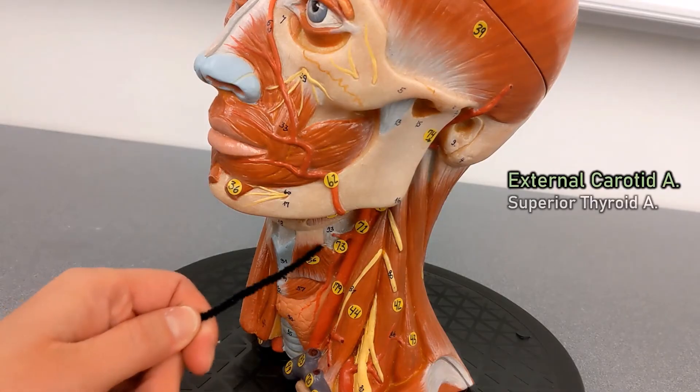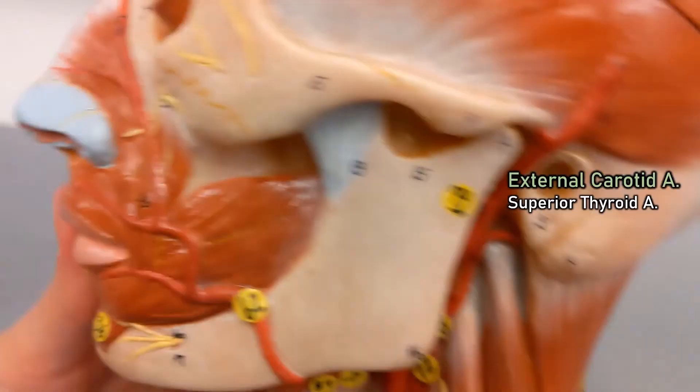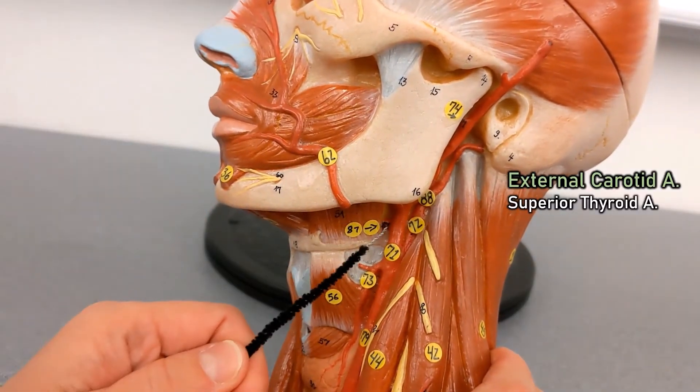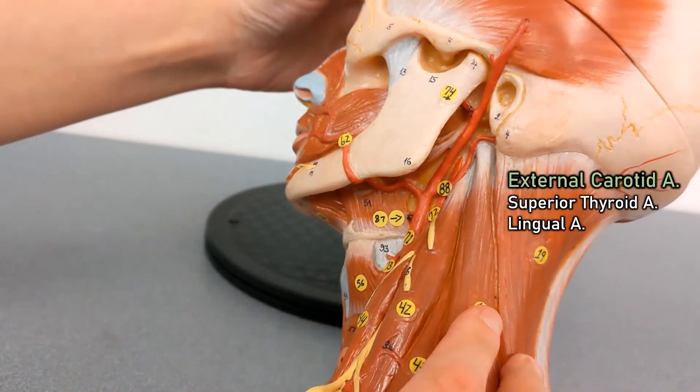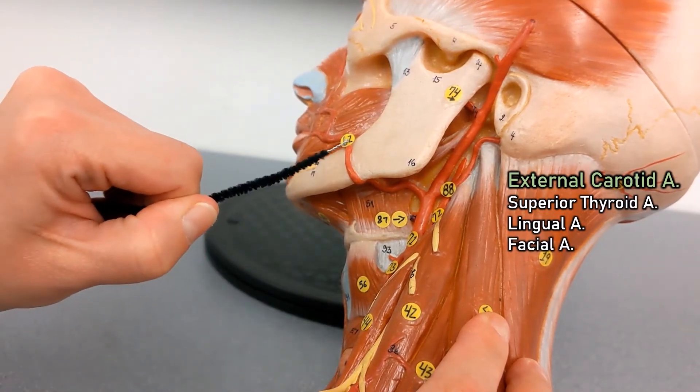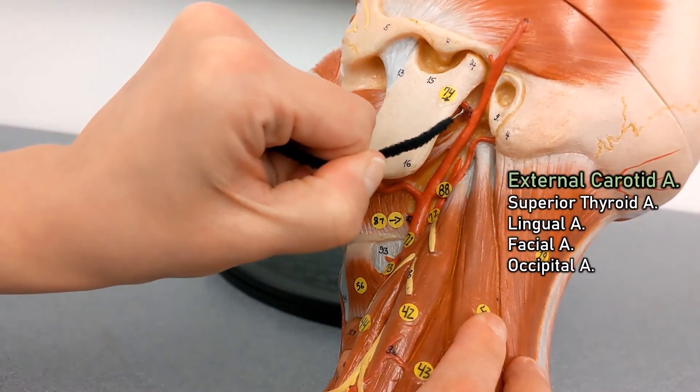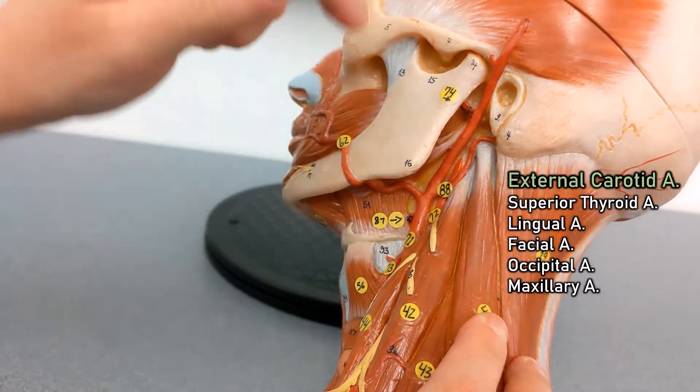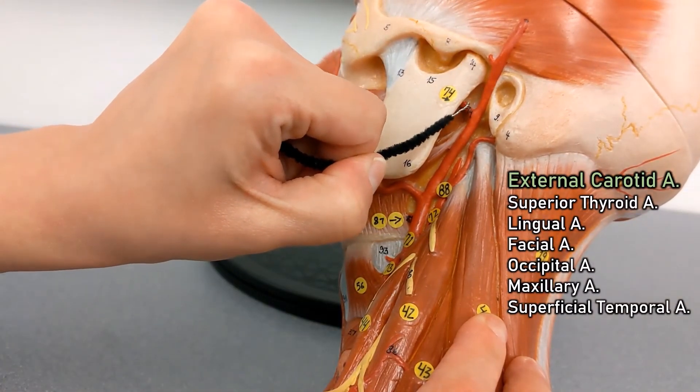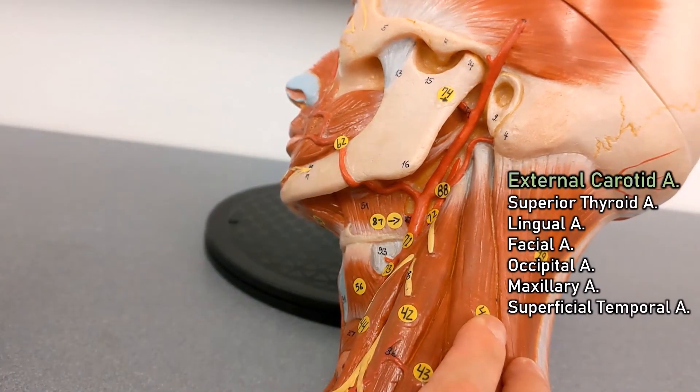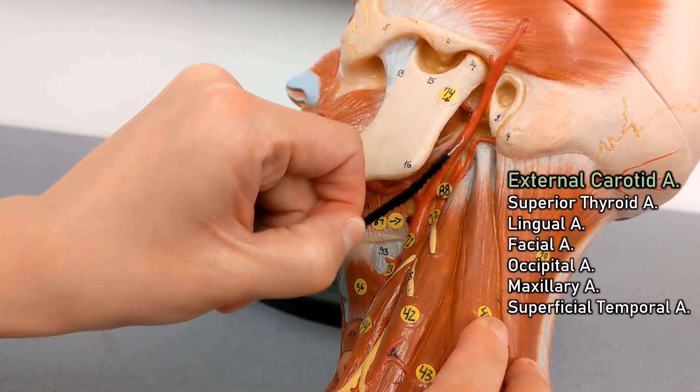Going to the thyroid is the superior thyroid artery. This is the lingual artery because it's going to the tongue. The facial artery, occipital artery, maxillary artery, and superficial temporal artery. When it splits into the maxillary and superficial temporal artery, that is the end of the external carotid artery.